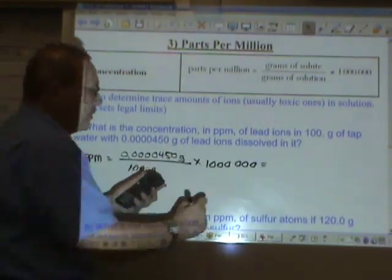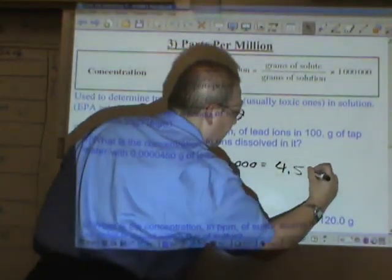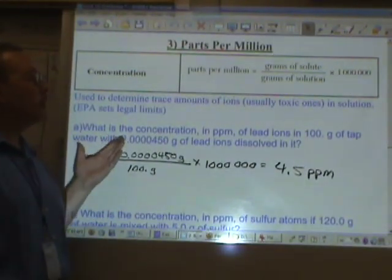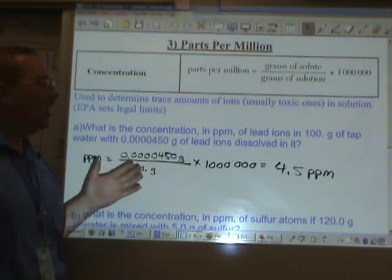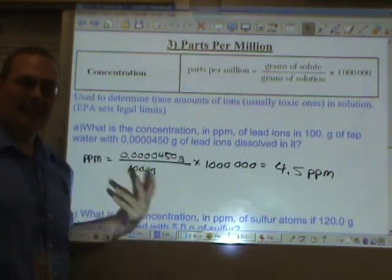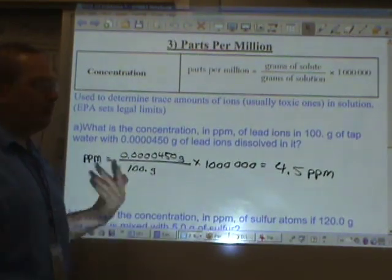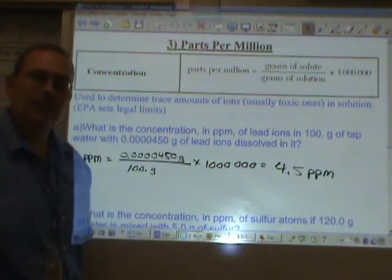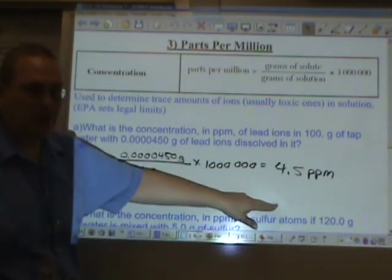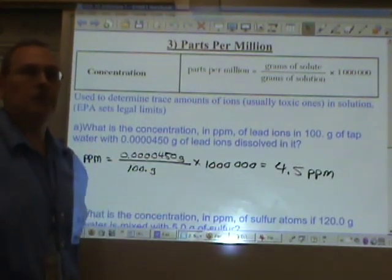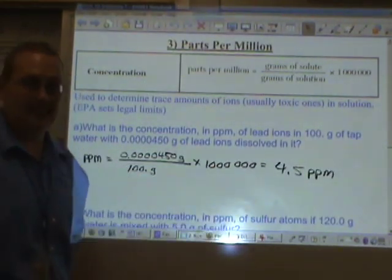And that equals 4.5 parts per million. Now, what you do is you take a look in the EPA, the Environmental Protection Agency's handbook, and determine what is the maximum parts per million of lead that's allowed in your drinking water. If the maximum parts per million is 10 parts per million, then your drinking water is safe. But if the maximum parts per million is 2 parts per million, your drinking water isn't safe and you're going to need to get some sort of filter system to remove that excess lead.